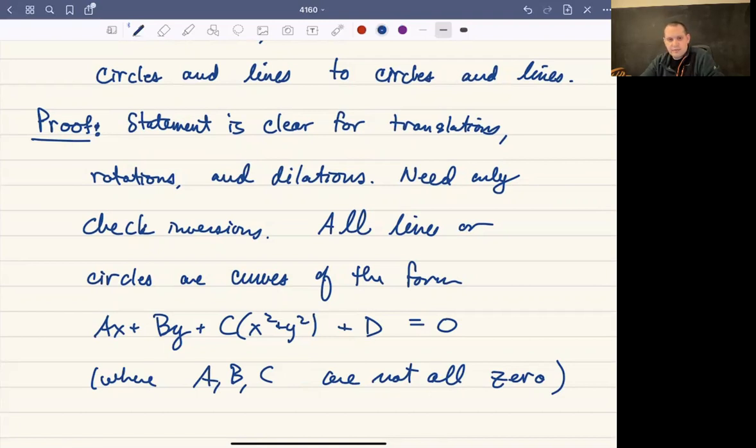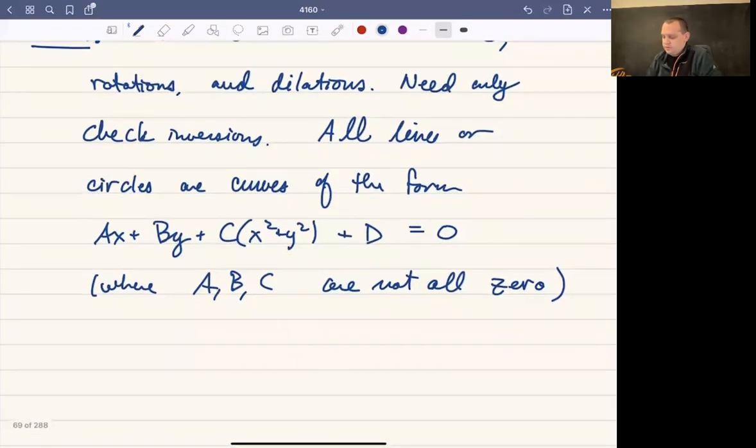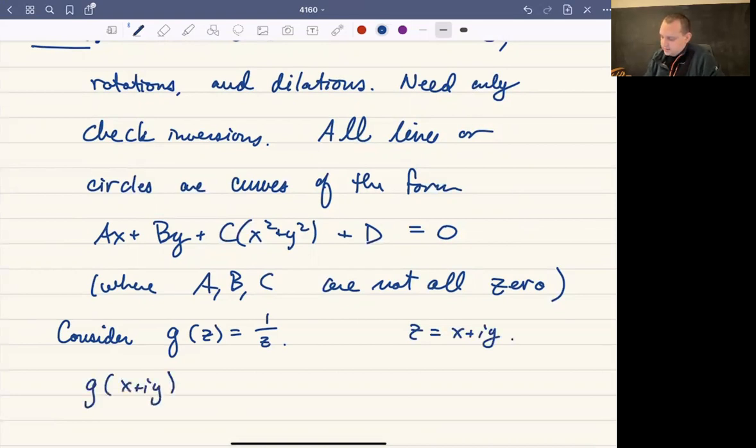What I want to do is think about what's going to happen if we were to take a function and plug it into an inversion. So let's consider G, and G(z) is just going to be 1/z. If we can prove that this map, 1/z, maps circles and lines to circles and lines, then we're done. Let's think of z as x + iy. If we look at G(x + iy), that's 1/(x + iy). Multiplying by the conjugate, we're multiplying by (x - iy)/(x - iy). That's going to be (x - iy)/(x² + y²).